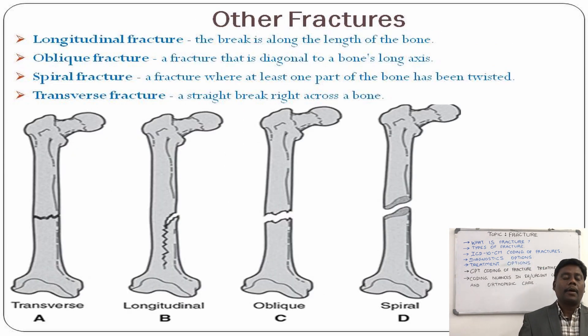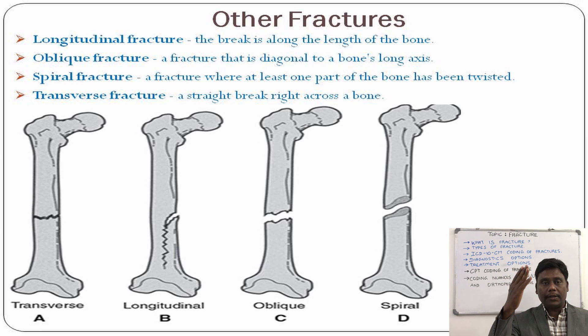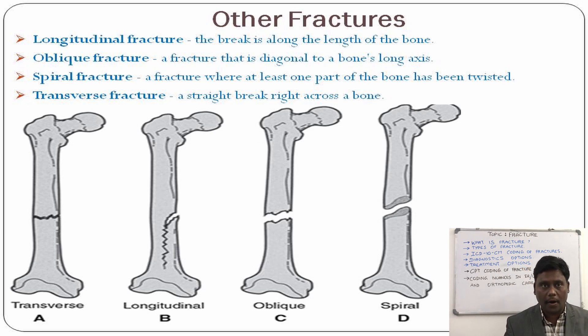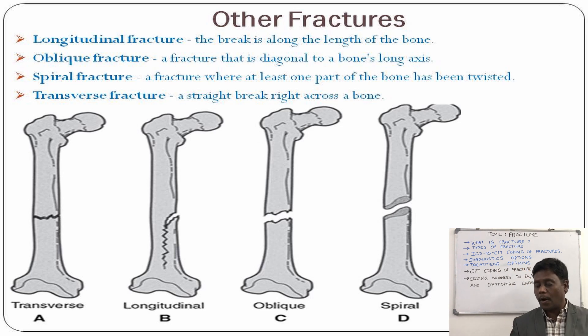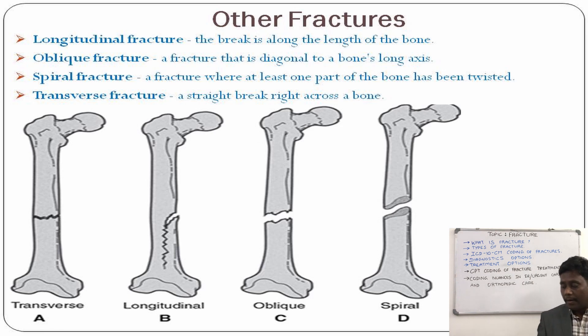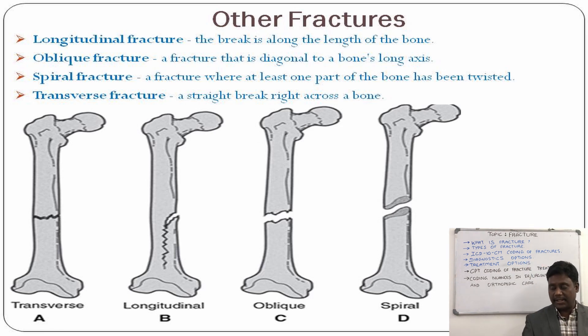Longitudinal fracture occurs along the length of the bone, whereas oblique fracture occurs diagonal to the bone axis.